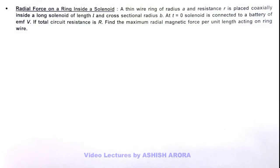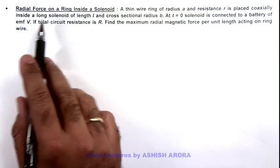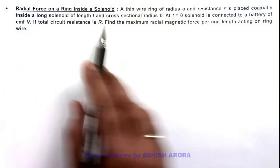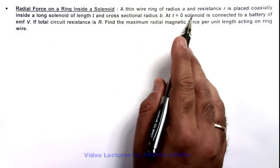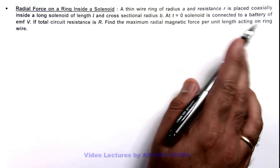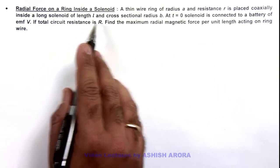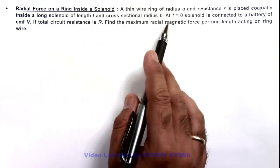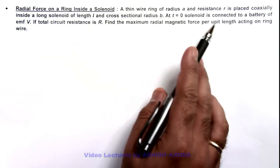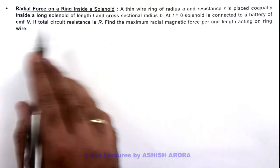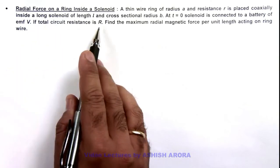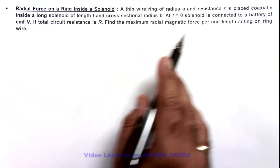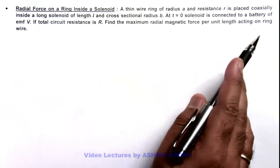In this illustration, we'll study the radial force on a ring inside a solenoid. We are given that a thin wire ring of radius a and resistance r is placed coaxially inside a long solenoid of length l and cross-sectional radius b. At t equal to zero, the solenoid is connected to a battery of EMF V. If total circuit resistance is R, we are required to find the maximum radial magnetic force per unit length acting on the ring wire.